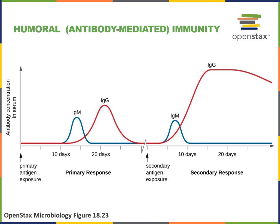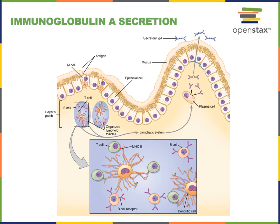This illustration shows us the mechanism of IgA antibody secretion by mucosa associated lymphoid tissues. The Peyer's patches are mucosa associated lymphoid tissues found in the small intestines. When antigens are encountered by lymphocytes in the mucosa associated lymphoid tissues, this can lead to activation of the antibody mediated immunity.